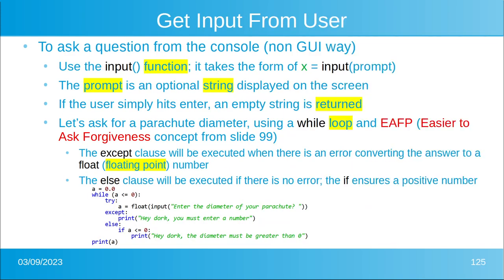We want to get input from the user. We're going to use the function called input. It takes the form of x equals input and then you put a prompt. The prompt is an optional string that's going to be displayed on the screen. If the user just hits enter, you're going to get an empty string. You always get a string from this function, and then you have to convert it to a number if that's what you're looking for.